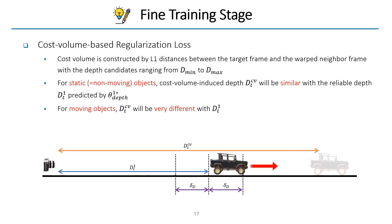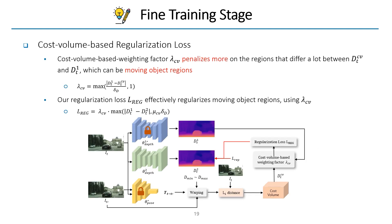Our cost-volume-based weighting factor is defined as the maximum value between 1 and the difference between DT1 and DTCV normalized by a hyperparameter delta D. Using this cost-volume-based weighting factor, we can regularize the depth prediction to be consistent on the moving object regions, while allowing fine-tuning on the static regions including non-moving objects.